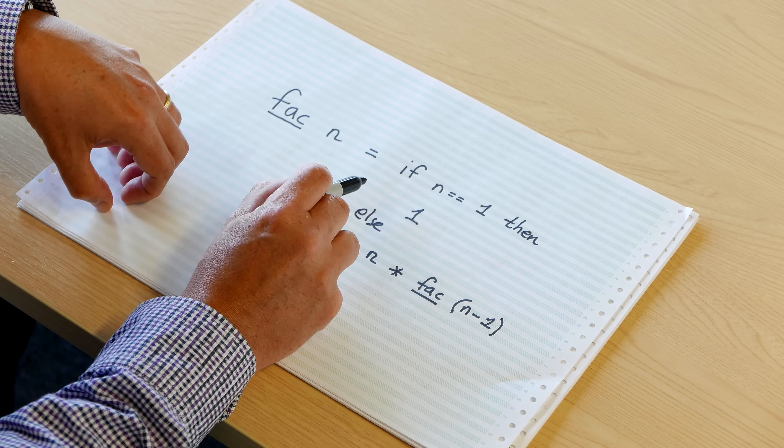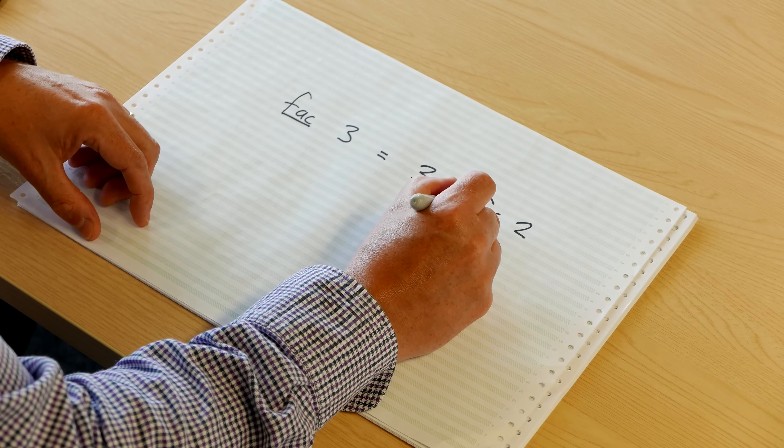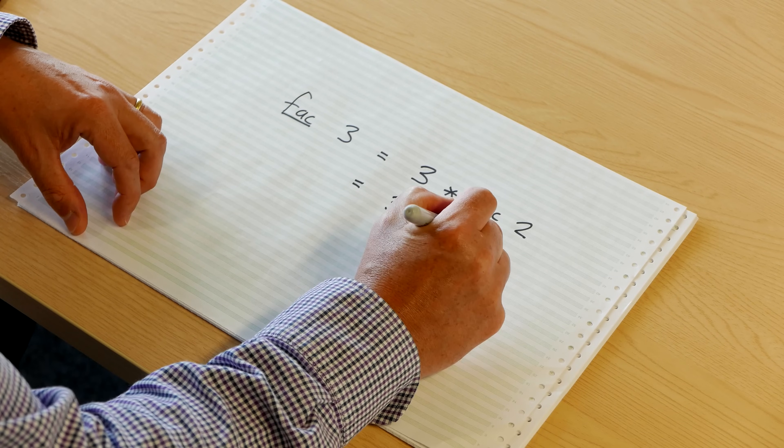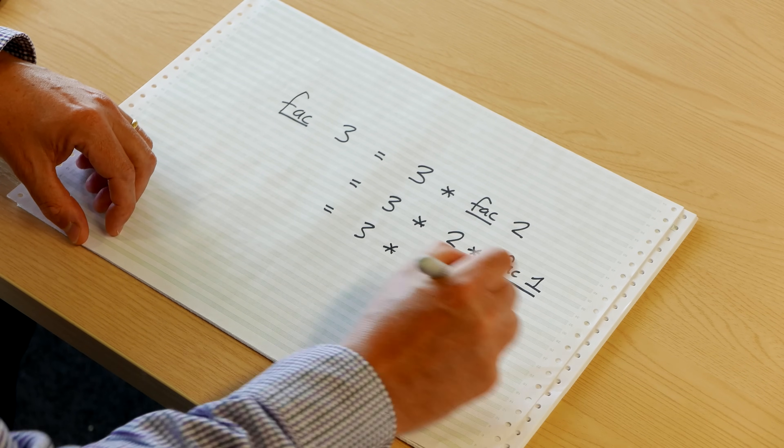The factorial of any number n is defined in terms of the factorial of n minus 1. So if you give it 3, it's going to loop around: 2, 1, and so on until it gets to 1, and then stop and do all the multiplies. Factorial of 3 gives 3 times factorial of 2, then 3 times 2 times factorial of 1, and since factorial of 1 is just 1 by our definition, we get 3 times 2 times 1, which is 6.